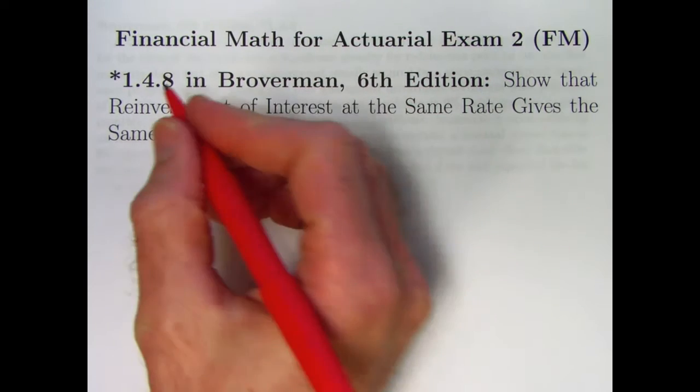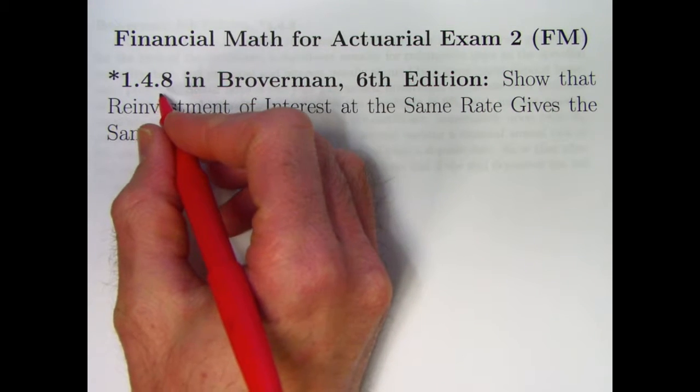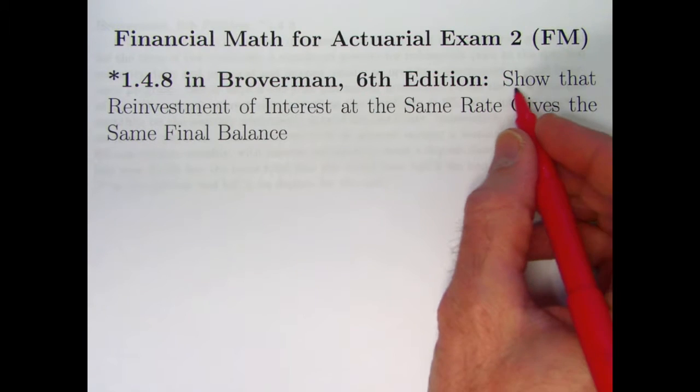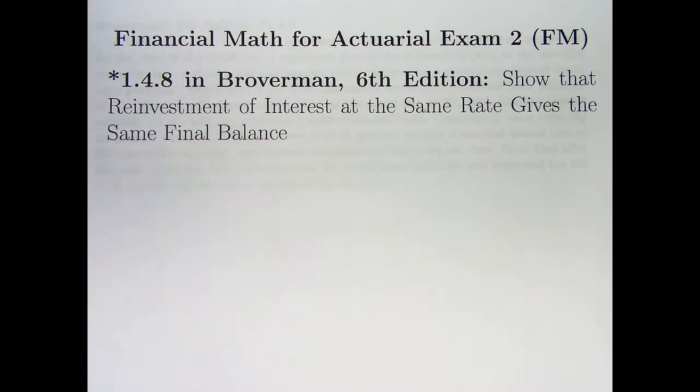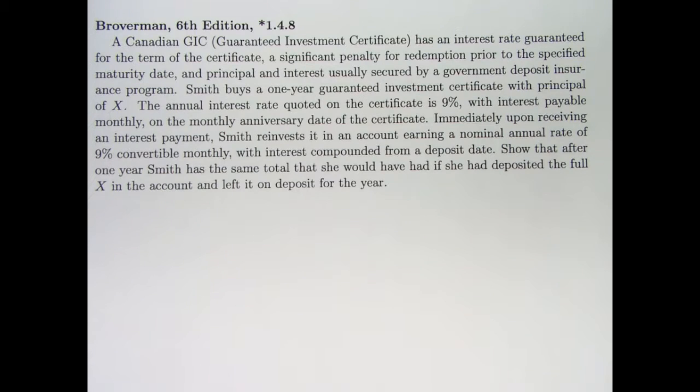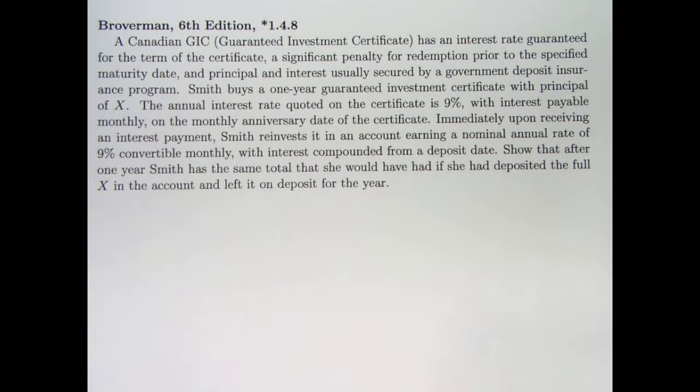In this problem, we're going to be looking at another starred problem in Broverman, 1.4.8, and this one I think is definitely worthy of being a starred problem. It's longer and harder, more conceptual. Show that reinvestment of interest at the same rate gives the same final balance. If you take the interest you earn from one account and put it in a different one at the same rate, do you get the same final balance? And the answer is you do.